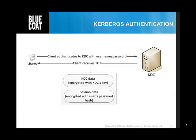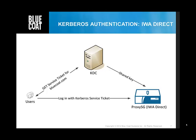Kerberos authentication. Prior to accessing the proxy SG appliance, the client logs into the local domain and obtains a ticket-granting ticket from the key distribution center. Kerberos authentication, IWA Direct: when the user attempts to access a URL that requires authentication, the proxy SG sends a challenge asking for Kerberos credentials. The client workstation obtains a service ticket from the KDC. The service ticket is presented to the proxy SG. The proxy SG appliance validates the service ticket without consulting a domain controller.